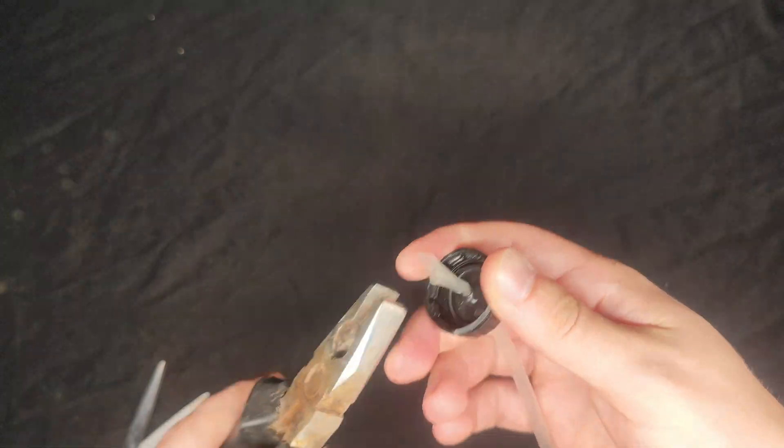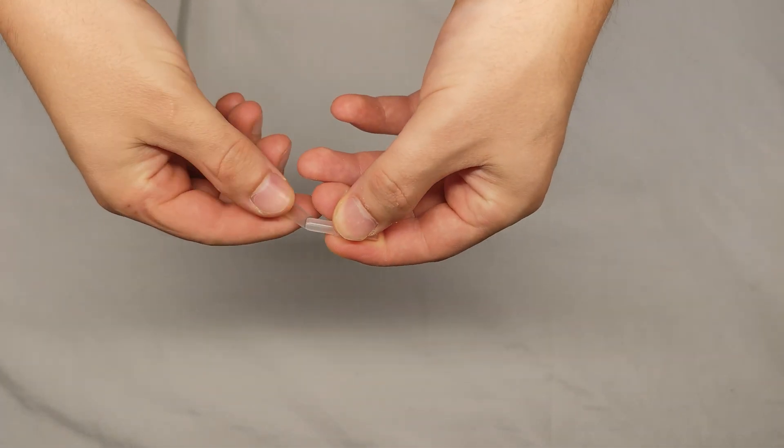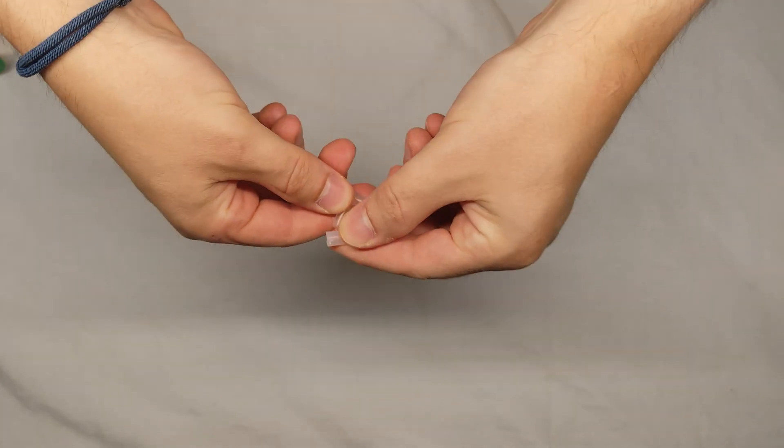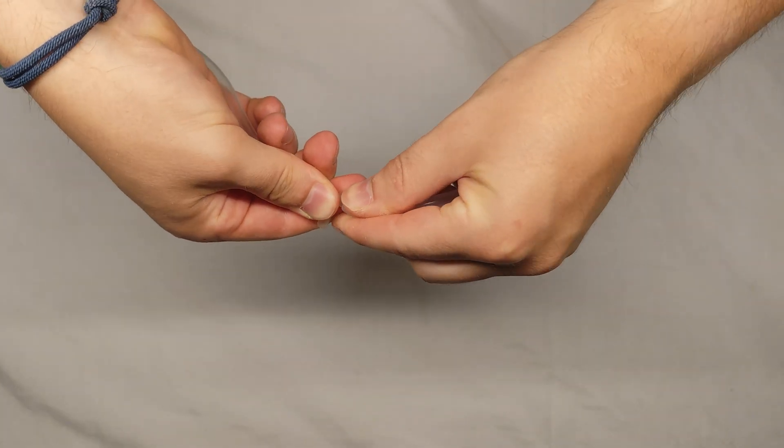Now let's put it all together. Connect the tubes into the T-connector. Make sure they go all the way in to avoid CO2 leaks. Two of the T-connector's ends should go to the valve cap.